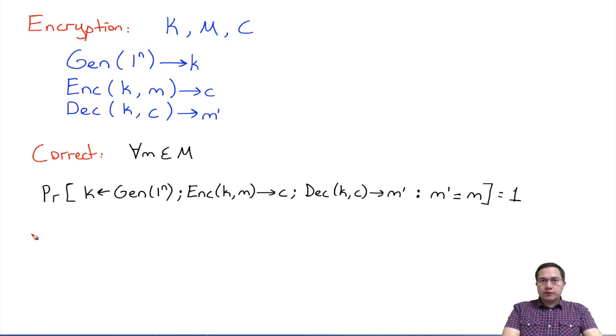Now we want to define security for an encryption scheme. There are multiple flavors of security. For today we will talk about eavesdropper security. In other words, this is called ciphertext-only security.